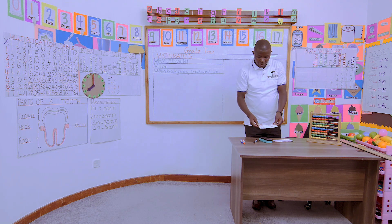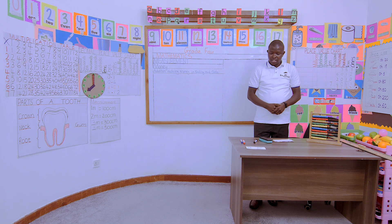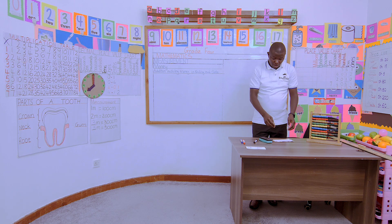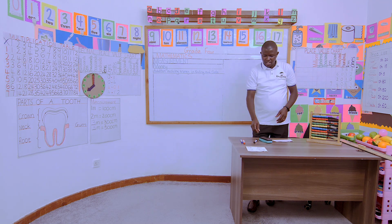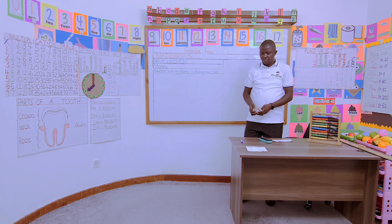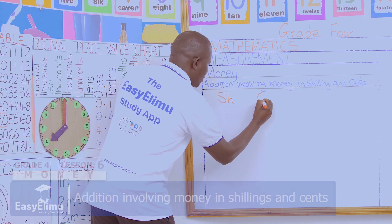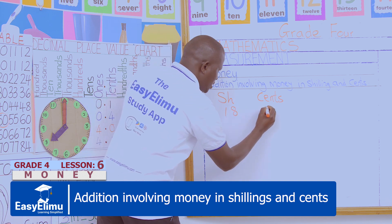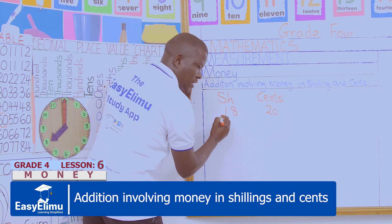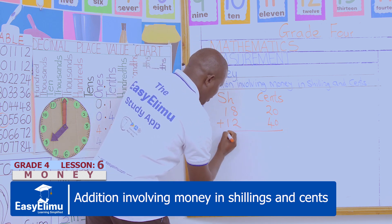Now, with me in our pairs are some number cards. Kindly observe this number — it is in shilling form: 18 shillings and 20 cents. Remember we are doing addition. 18 shillings and 20 cents, we are adding it with 12 shillings and 40 cents. Let me write it on the board: 18 shillings and 20 cents, adding 12 shillings and 40 cents.